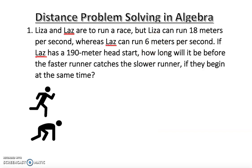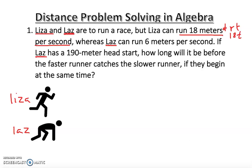So let's read the problem and note down the information. First, I see two individuals: Lisa and Large. Lisa can run 18 meters per second, so her distance is 18t — that's distance equals rate times time. So Lisa is running at 18 meters per second.